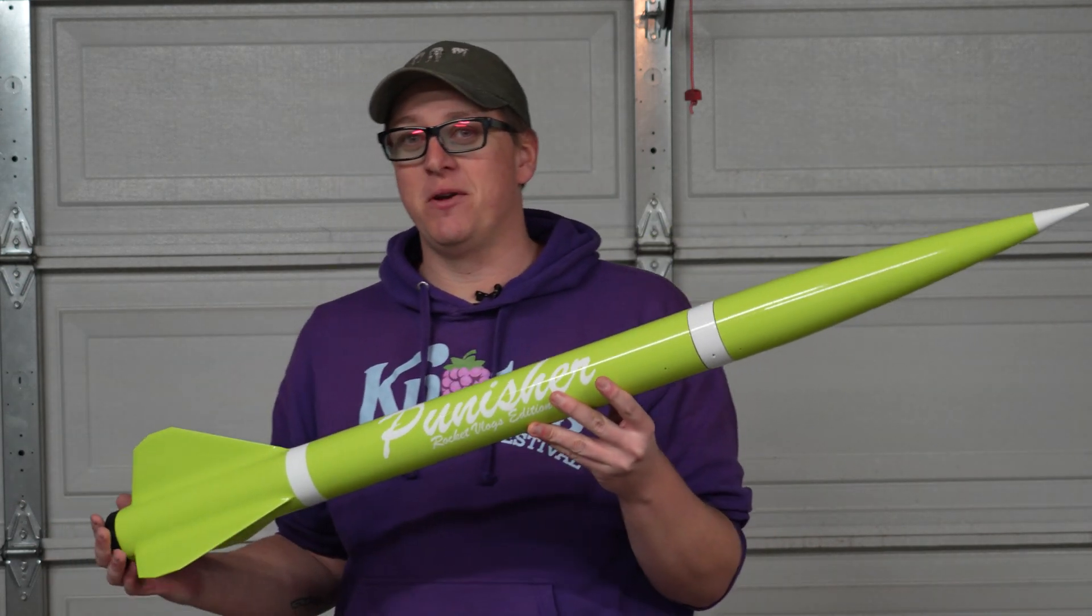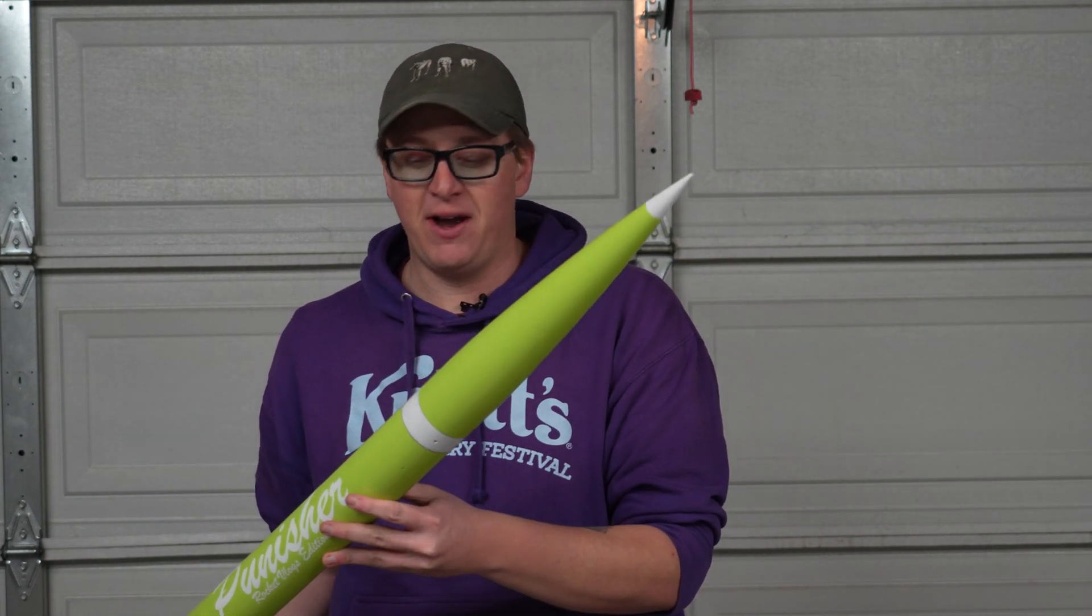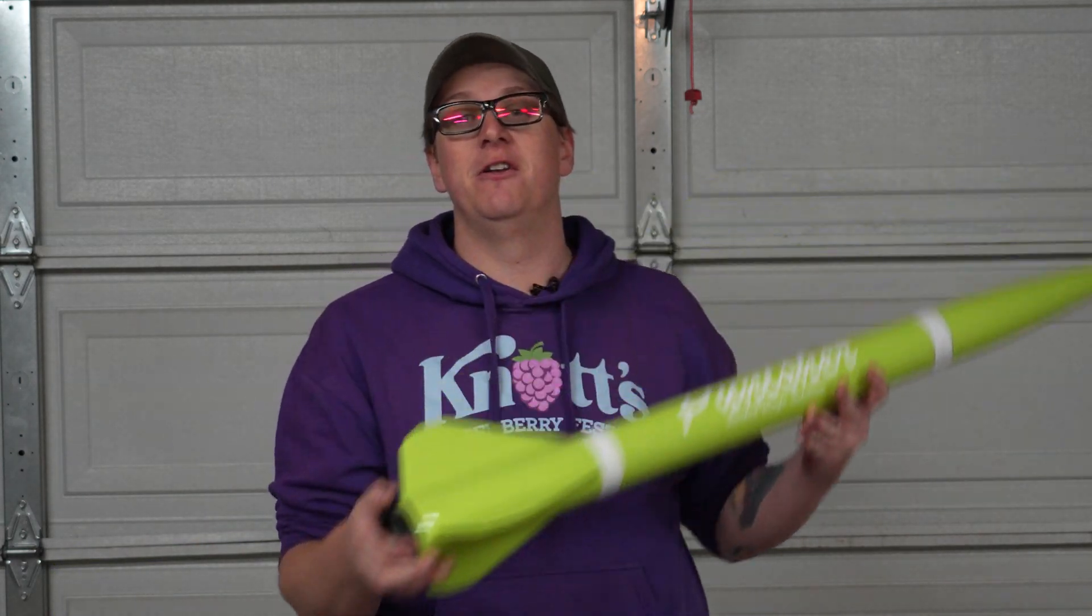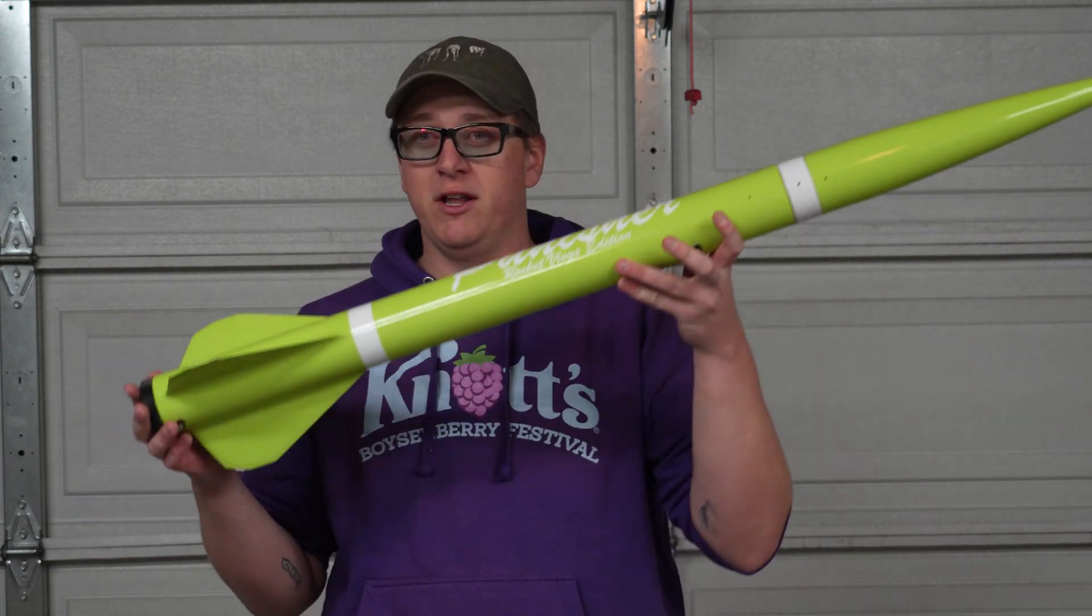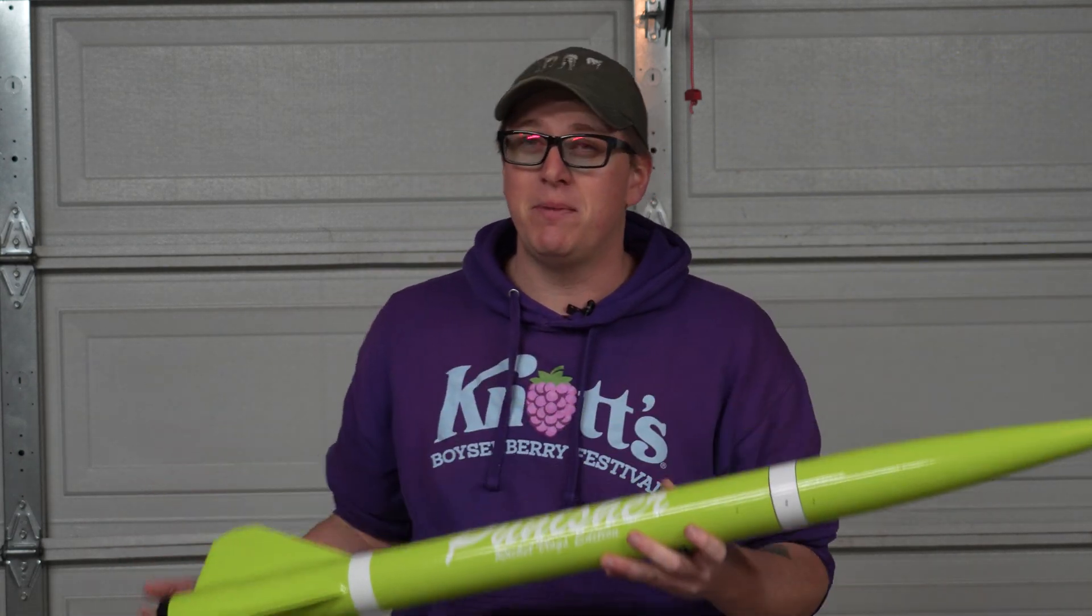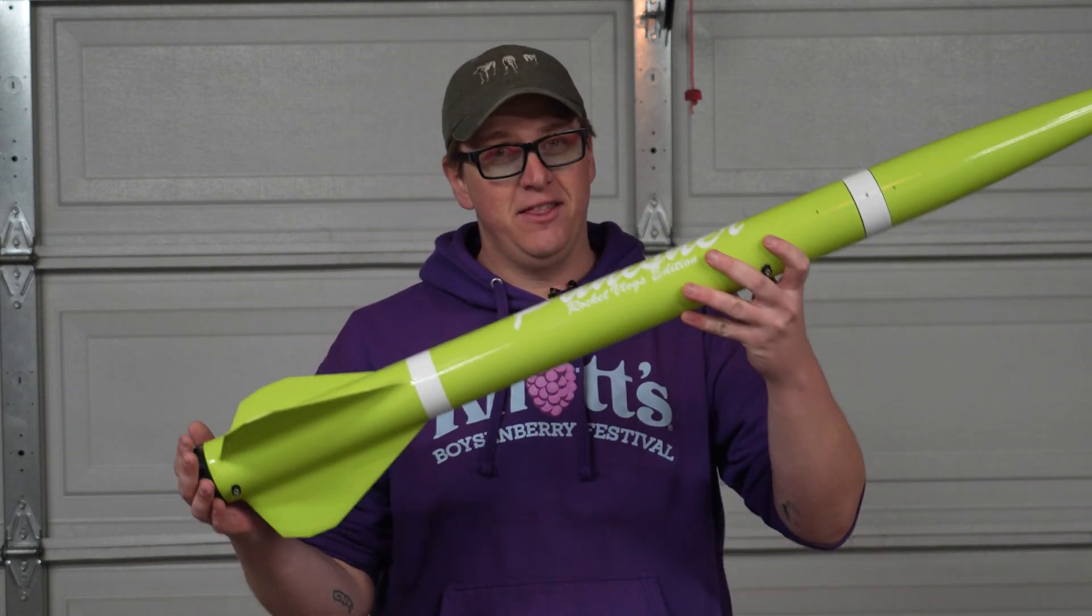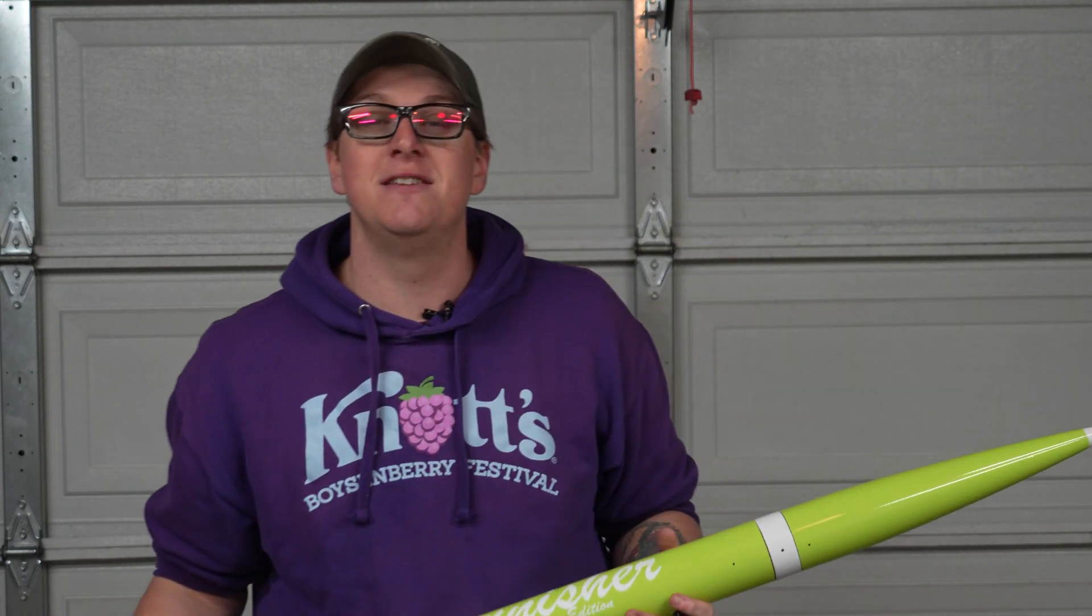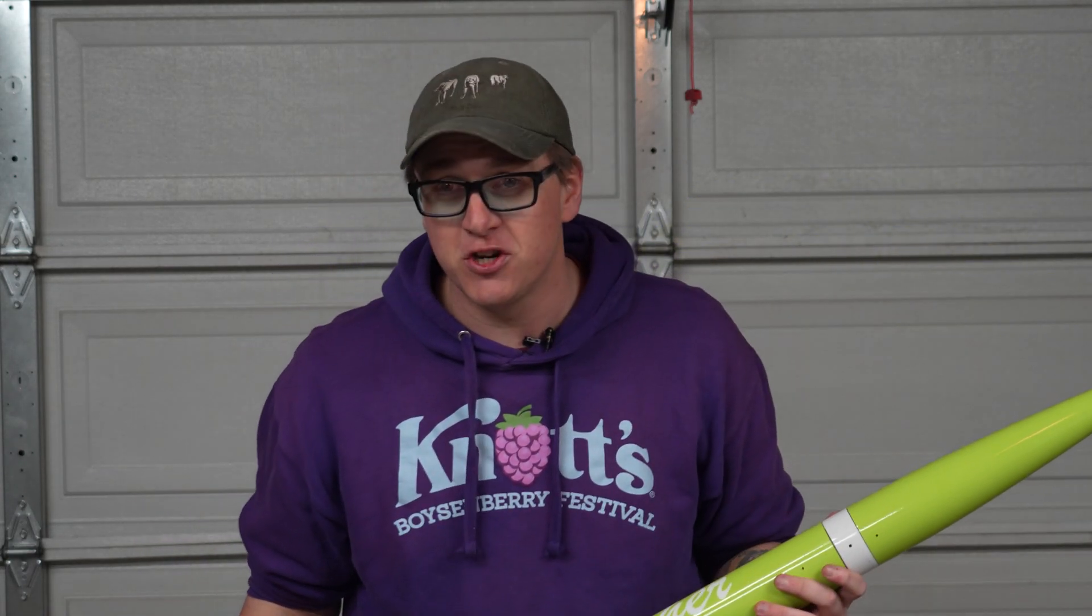It's a 2.6-inch diameter rocket with that proper 5-to-1 nose cone and a 54-millimeter motor mount. All said and done with recovery electronics and everything, it only weighs about 3 pounds and yes, the 54-2800 case fits in here. So that means it can fly on anything from H to L.